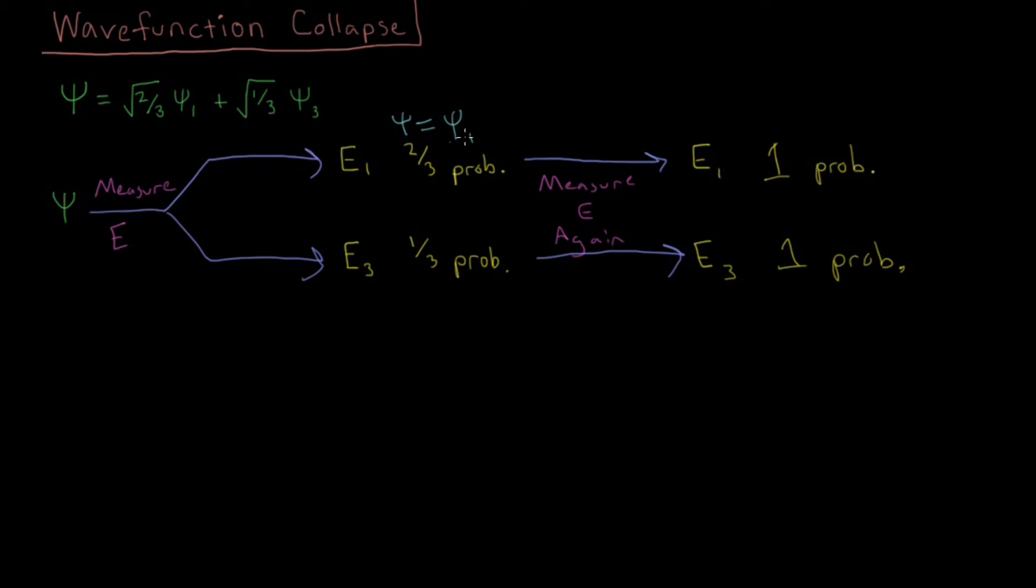The coefficient here is 1, and the coefficient for every other state is 0. And similarly, if we measure E3 first, then the wave function collapses into the third eigenstate. And this coefficient is 1, every other coefficient is 0. So that's the concept of wave function collapse.